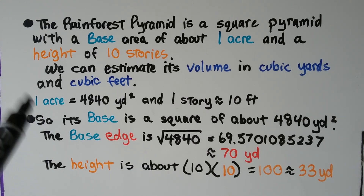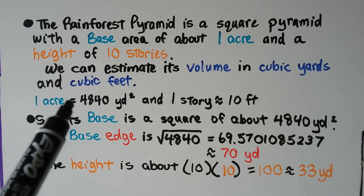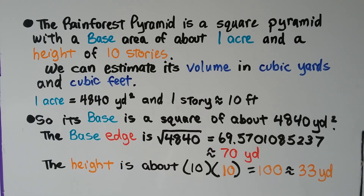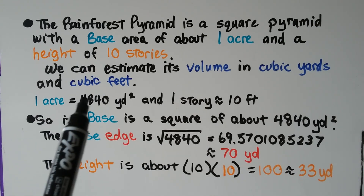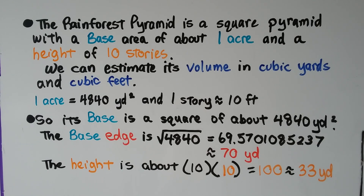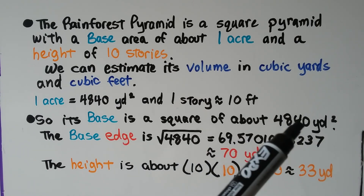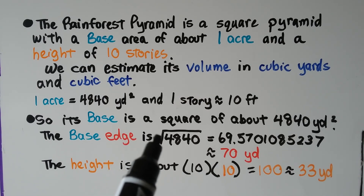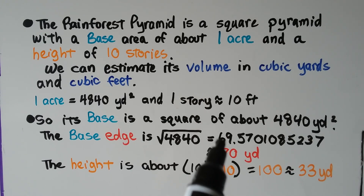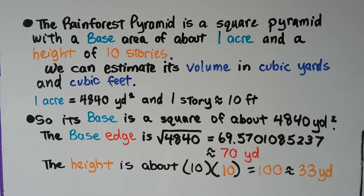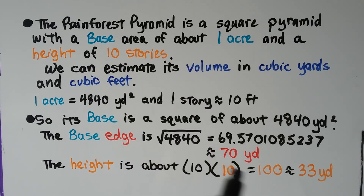To help us: one acre equals 4,840 square yards, and one story is about 10 feet. The base is approximately 4,840 square yards, so the base edge is the square root of 4,840, which is approximately 69.57, so about 70 yards. The height is 10 stories times 10 feet per story equals 100 feet. Since there are three feet in a yard, that's approximately 33 yards.